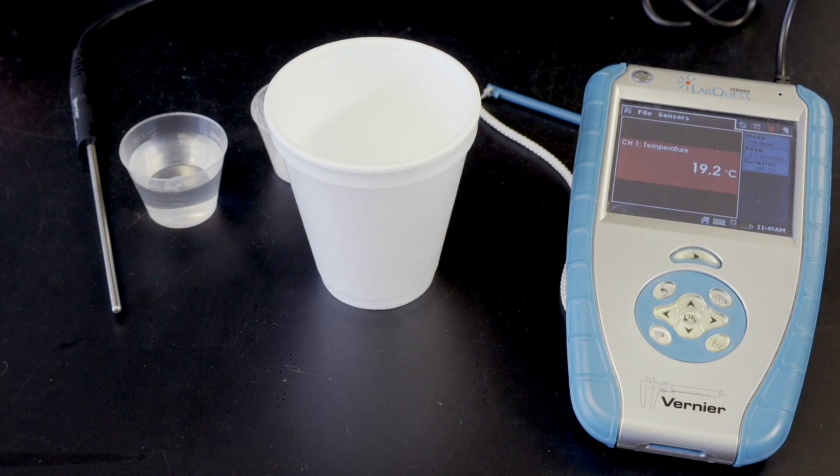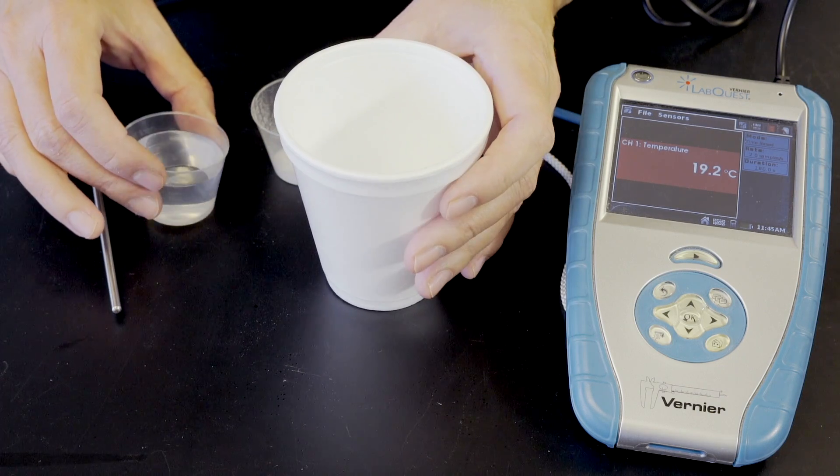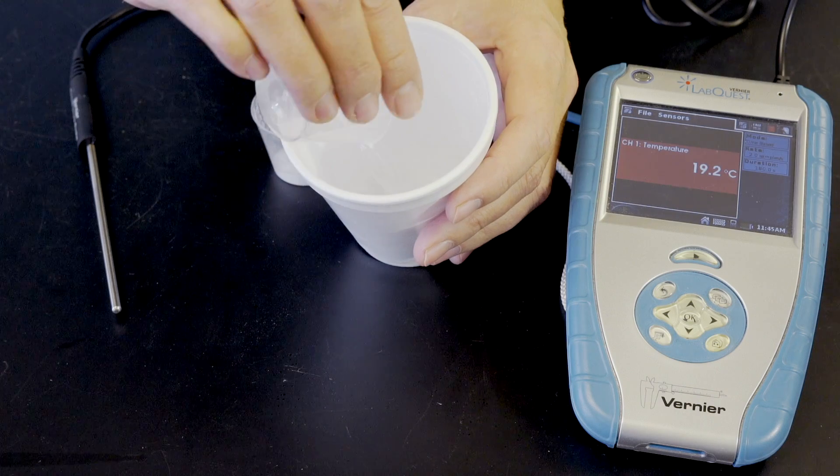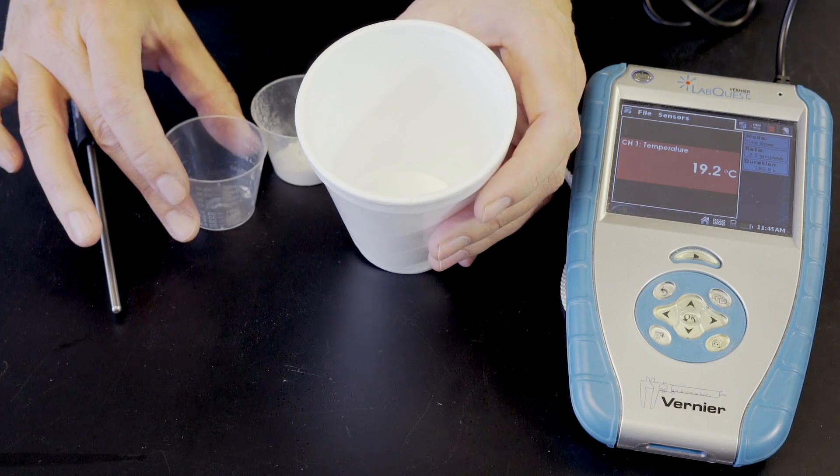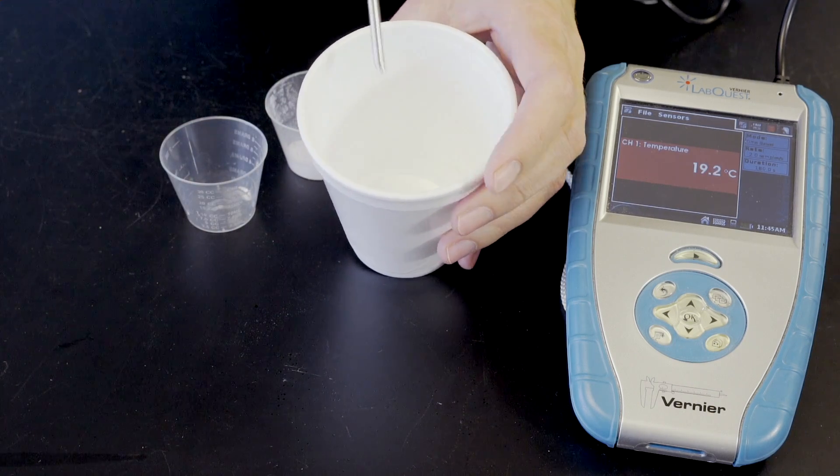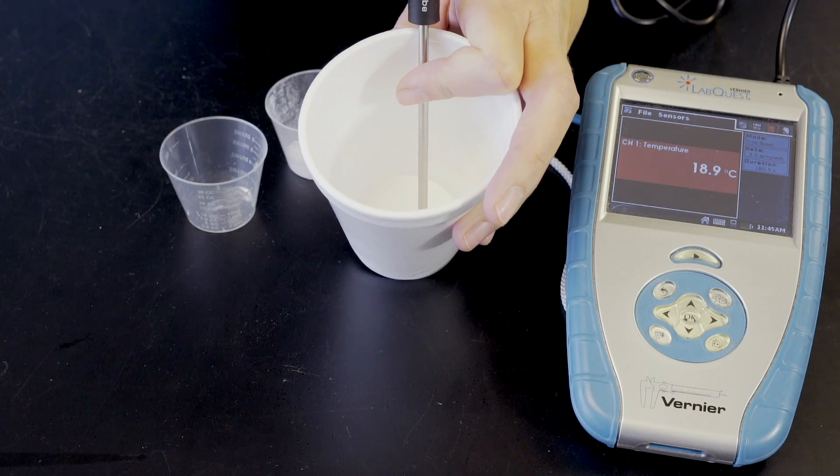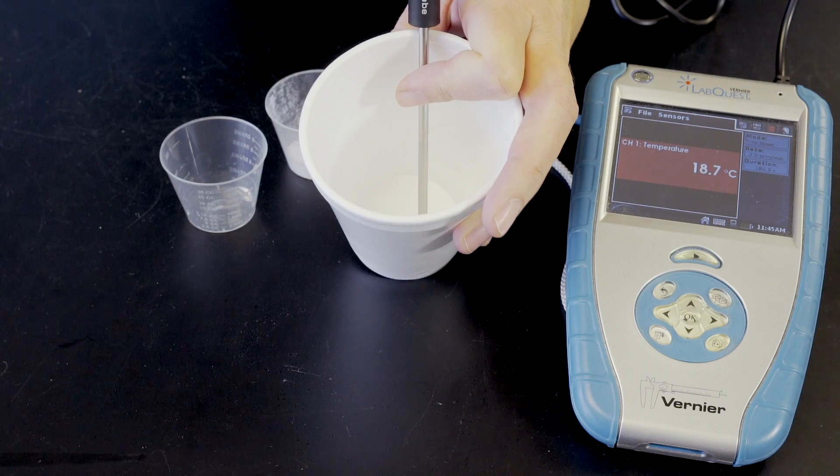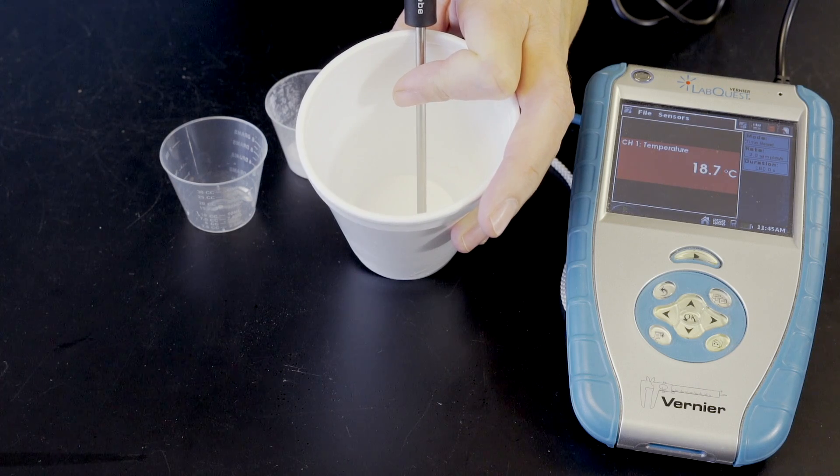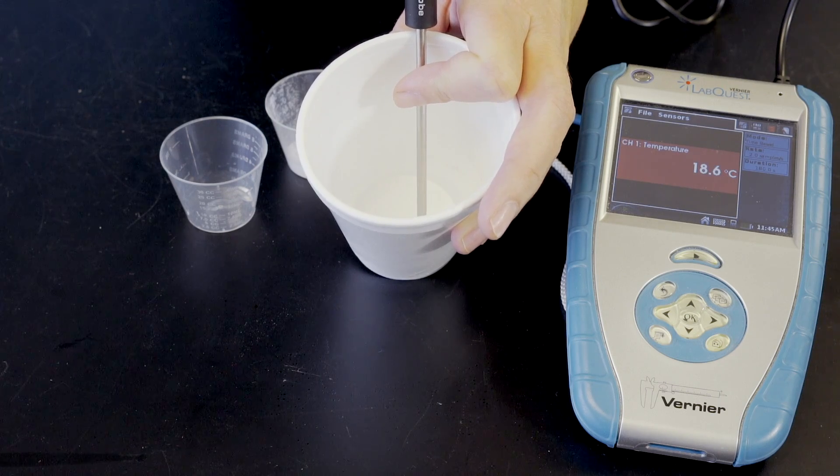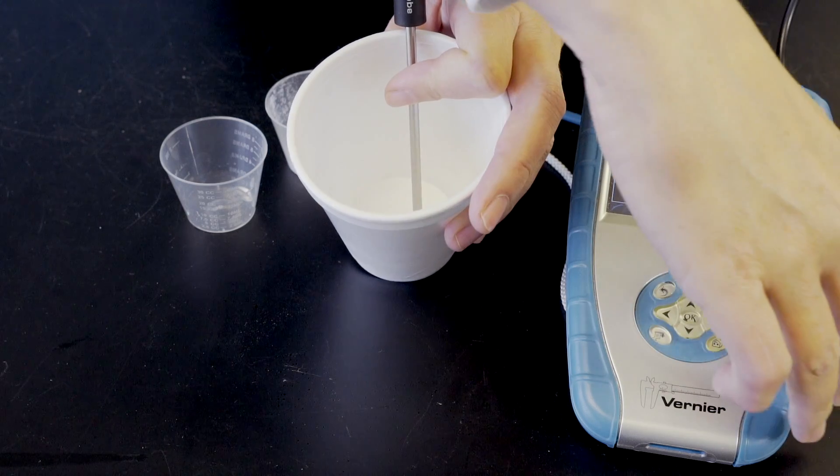In reaction 1, 30 mLs of citric acid is added to a styrofoam cup. The temperature probe is placed into the liquid, and once a stable temperature is reached, recording begins.